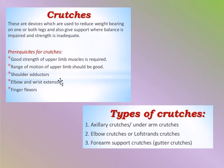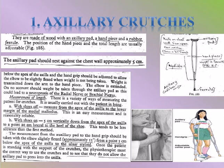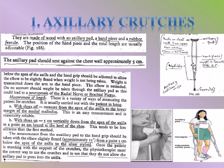Axillary crutches are made of wood with an axillary pad, a handpiece, and a rubber ferrule. The position of the handpiece and total length are usually adjustable. The axillary pad should rest against the chest wall approximately 5 centimeters below the apex of the axilla. The hand grip should be adjusted to allow the elbow to be slightly flexed when weight is not being taken. Weight is transmitted down the arm to the hands when the elbow is extended. No weight should be taken through the axillary pad, as this could lead to neuroplegia of the radial nerve or brachial plexus.